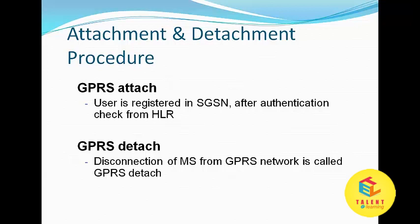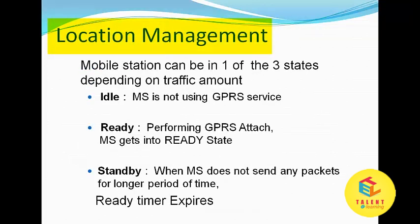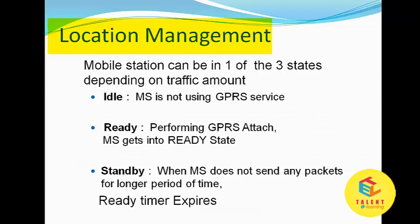GPRS detachment refers to the disconnection of the MS from the GPRS network. It can be initiated by the MS or by the network. For location management, a mobile station can be in one of three states depending on traffic amount.